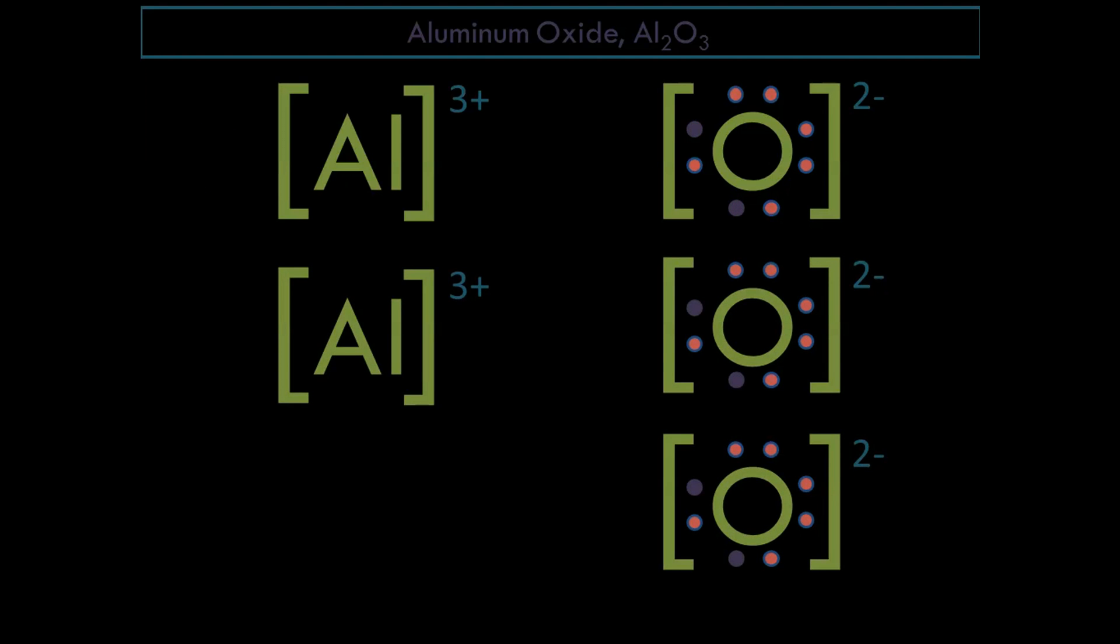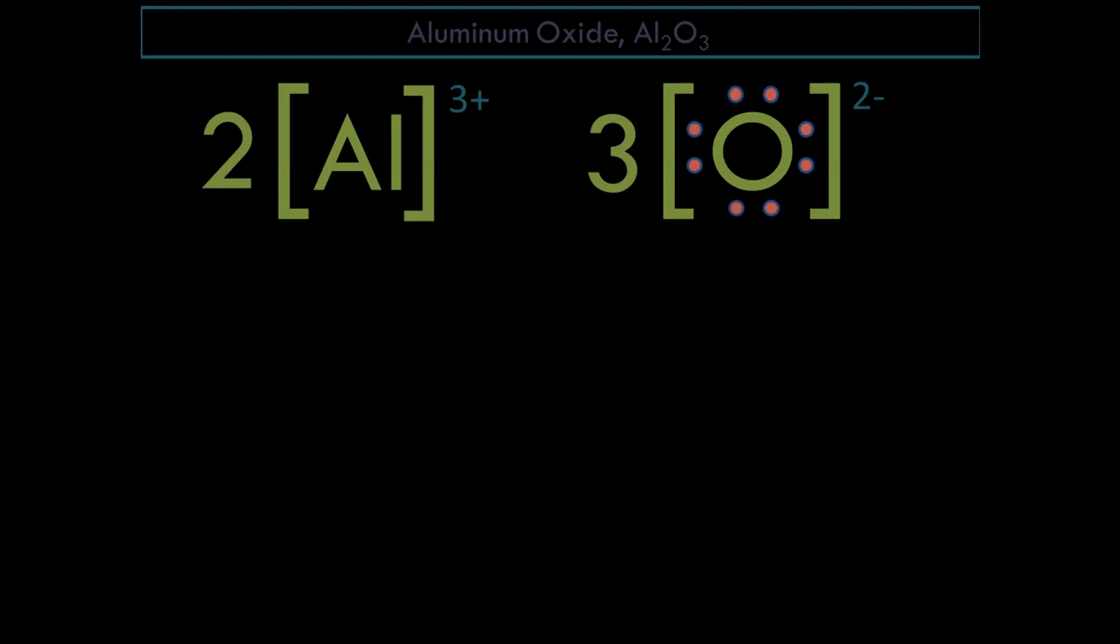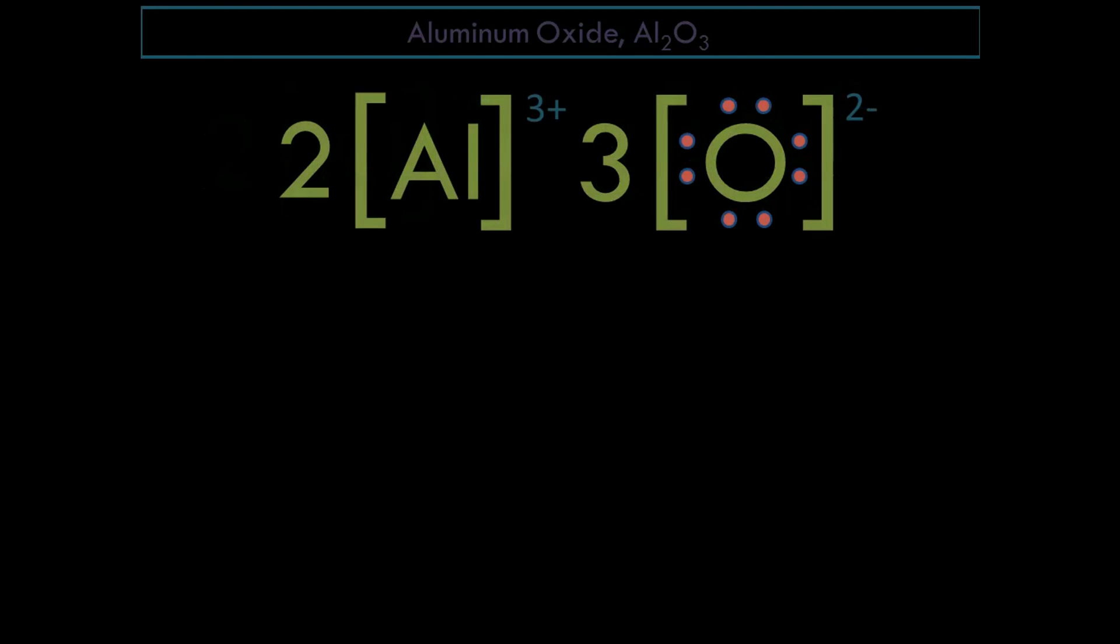Instead of writing it that way, just place a coefficient to represent the number of aluminum ions and oxygen ions. Then combine them together. That is the Lewis dot structure for this ionic compound, aluminum oxide. As simple as that.